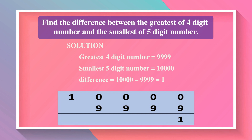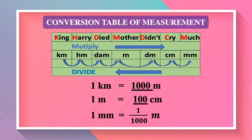The difference between the smallest 5-digit number and the greatest 4-digit number is 1. Conversion table of measurements: we can remember the different units using the mnemonic 'King Harry Died, Mother Did Not Cry Much' — representing kilometer, hectometer, decameter, meter, decimeter, centimeter, and millimeter. Whenever we jump from left to right, we multiply by 10 for each step; to jump from right to left, we divide by 10 for each step. So 1 kilometer equals 1,000 meters.